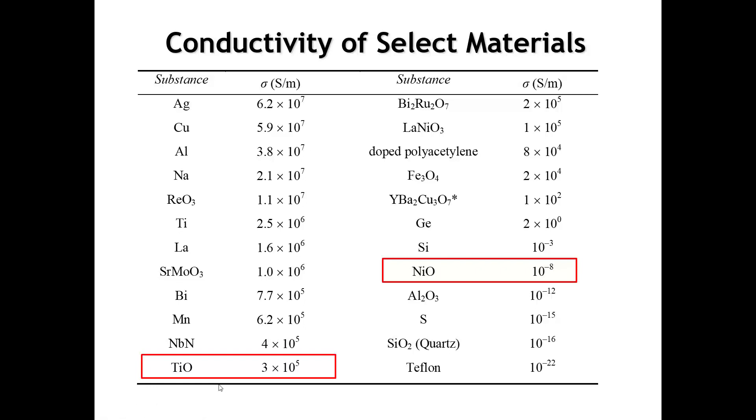Yet their conductivities are widely different, 13 orders of magnitude different. The explanation for this divergence basically comes back to electron-electron repulsions. Let's take a closer look at that.